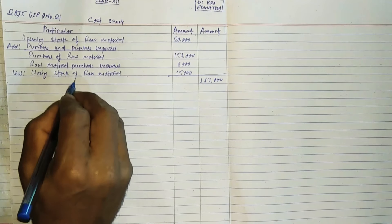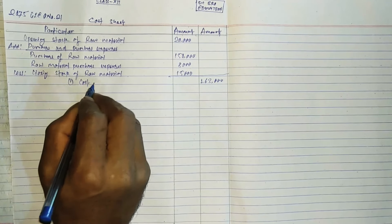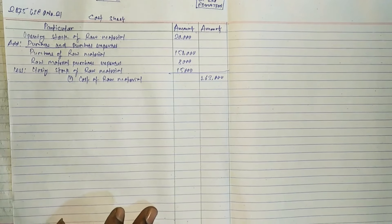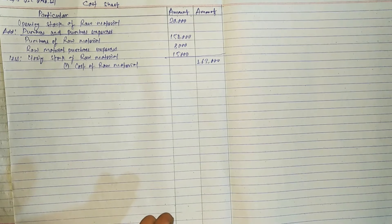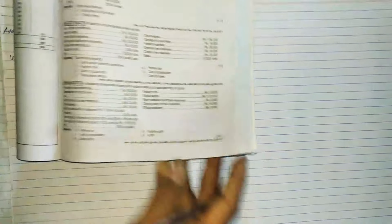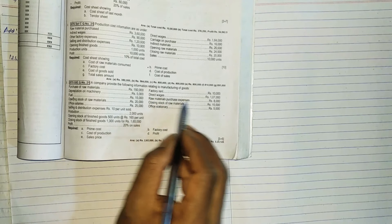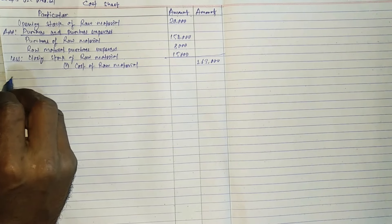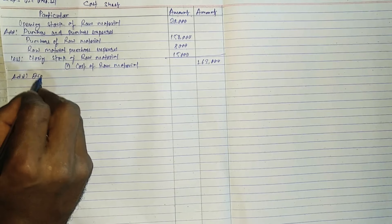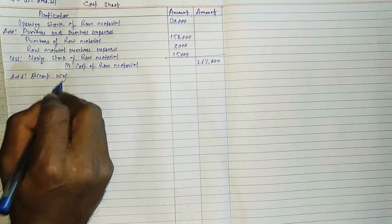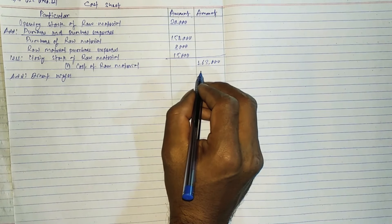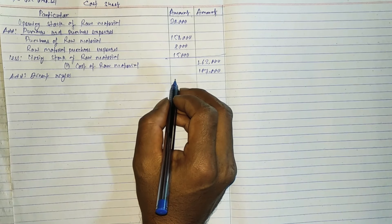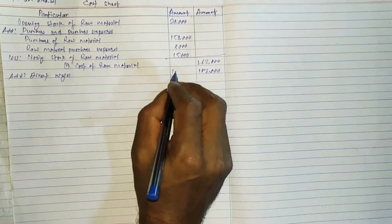The cost of raw materials is calculated as 1,60,000. Writing this directly, I add the direct expenses — direct, direct — I have to write 1,7,000.